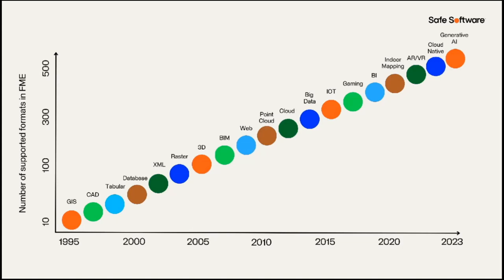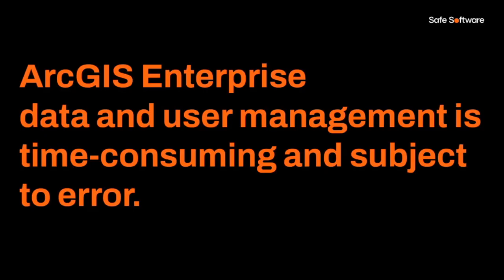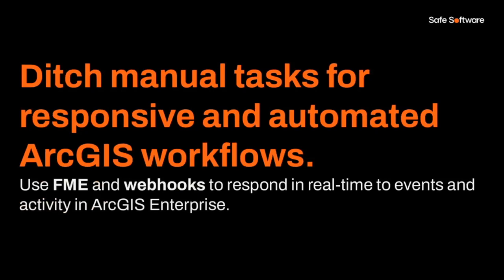We've kept up with the increasingly light-speed pace of change in the data landscape — we support over 500 data formats including all the latest acronyms: AI, AR, VR, IoT, you name it. Our supported integrations list is always expanding, but the ArcGIS Enterprise platform is one of our most well-established integrations. The webhooks integration is a relatively new approach compared to something like SDE and offers considerable benefit, addressing the often time-consuming and error-prone task of manual data and user management in ArcGIS Enterprise.